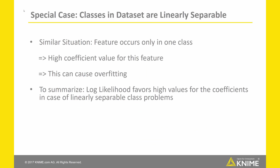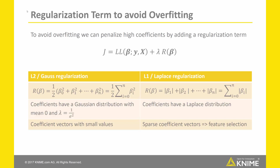To summarize, the log-likelihood function favors high coefficient values in cases of linearly separable class problems. To avoid overfitting and convergence problems, we can penalize high coefficients by adding a regularization term to the log-likelihood function. The KNIME Learner node provides two common regularization terms. The first is called Gauss or L2 regularization, where the regularization term is the quadratic sum of the coefficient values — the name comes from this being the square of the L2 norm. The second is L1, also known as Laplace regularization, where the L1 norm of the coefficients is added to the log-likelihood function.